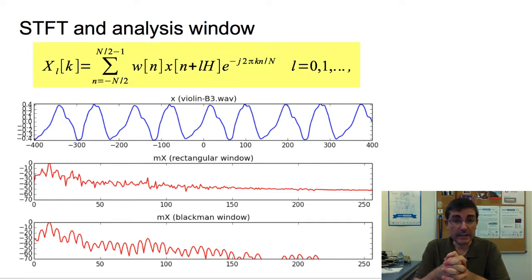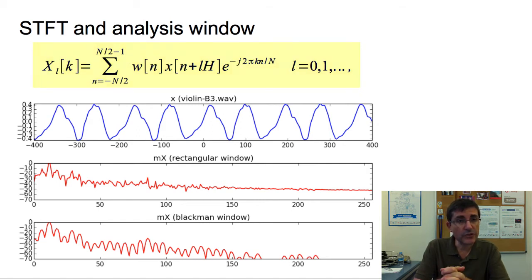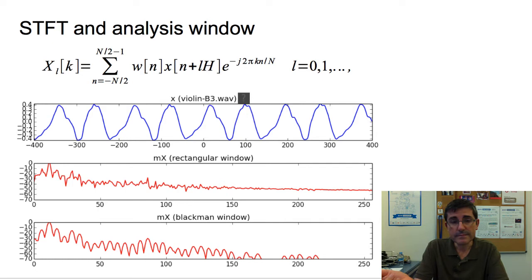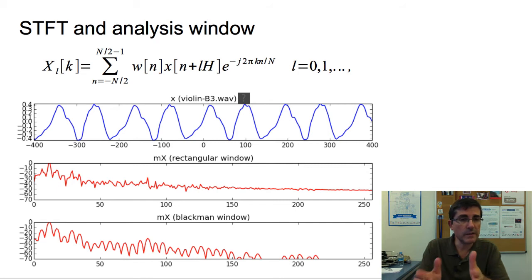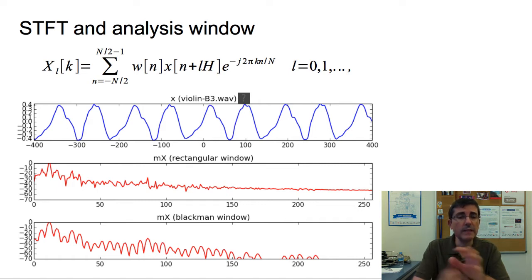We saw this equation in the first part of the lecture. We now know that the short time Fourier transform is the time-varying version of the DFT, and that windowing is a key concept to understand the STFT. For example, if we start from a violin sound, the magnitude spectrum of one frame is quite different depending on the window we use. If we use a rectangular window, we can see this in the first plot.